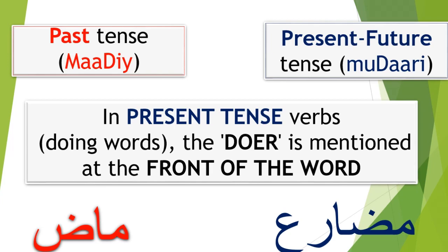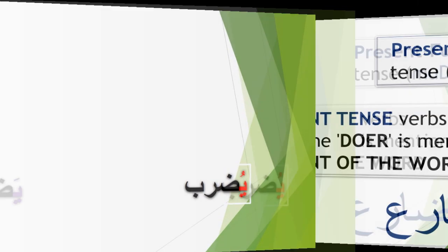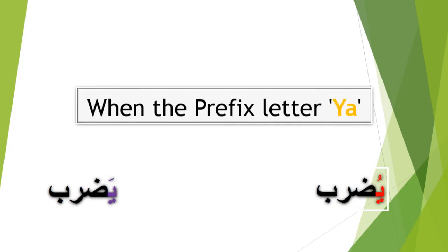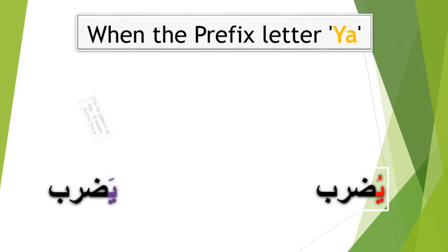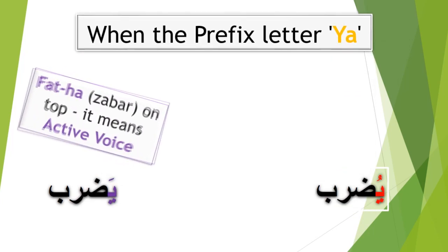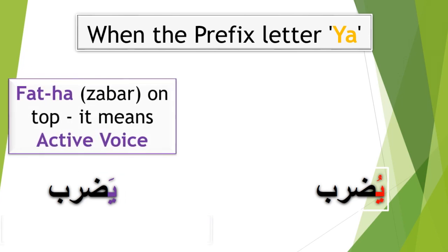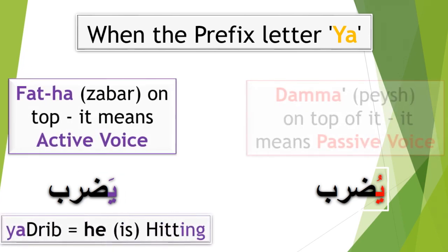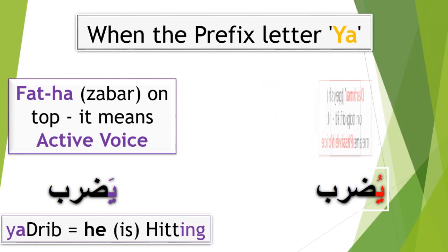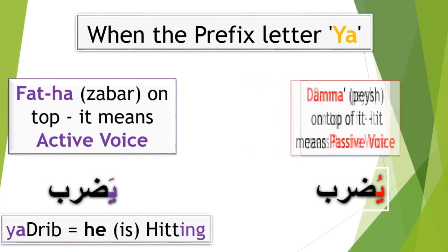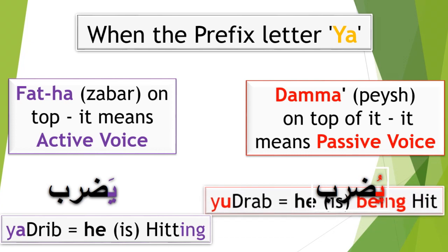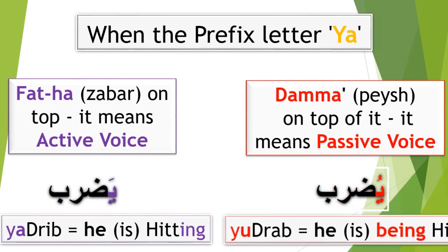When the prefix letter ي (meaning he or they) has a فتحة or زبر on top of it, it means active voice — like in يضرب (he is hitting). When it has a ضمة or پيش on top of it, it means passive voice — like in يُضرب (he is being hit).